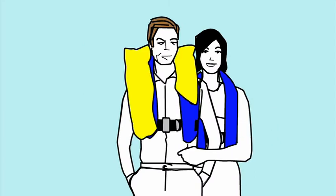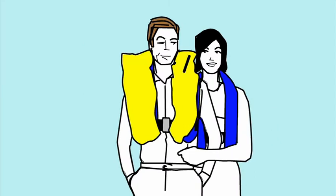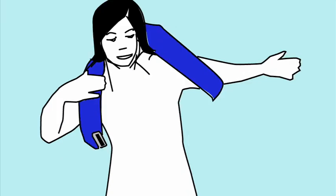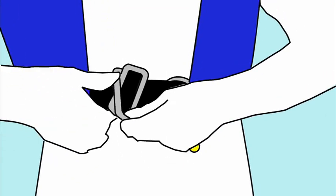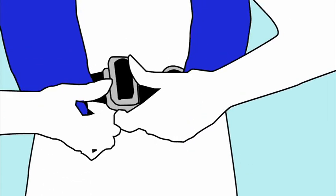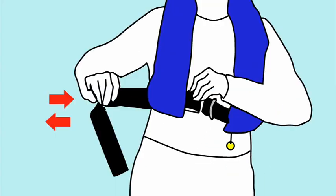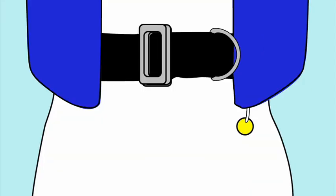Life jackets should be worn at all times on board. With an integral harness, they fasten by buckle or clip at the front, and a crutch strap. They should be adjusted to fit snugly before setting sail. Jackets inflate automatically in water, but can also be inflated manually by pulling on the toggle.